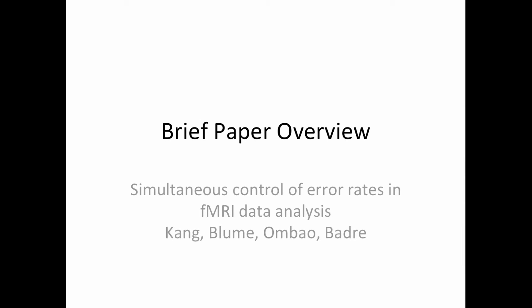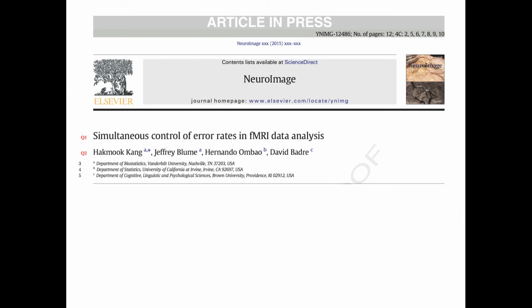So this is the first brief paper overview I'm doing. This is a broad overview, sort of the cruising altitude overview of this paper that somebody had posted on the Facebook page. It just so happened they caught me at a time I was going to read a paper, and it looked interesting, so I read it and threw these slides together. So the paper is Simultaneous Control of Error Rates in FMRI Data Analysis by King, Bloom,